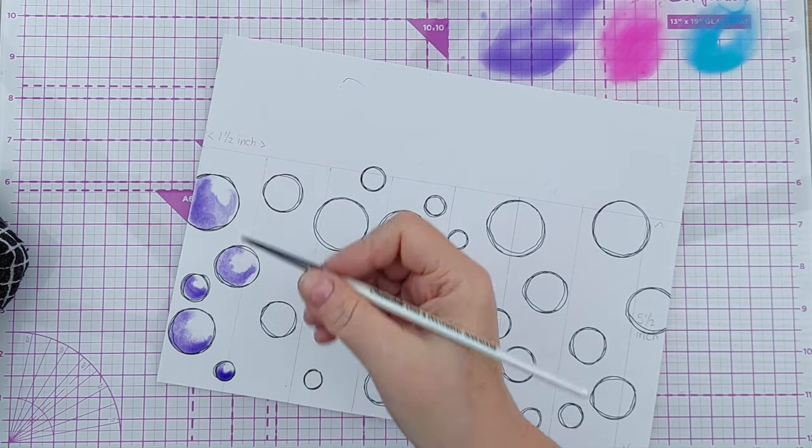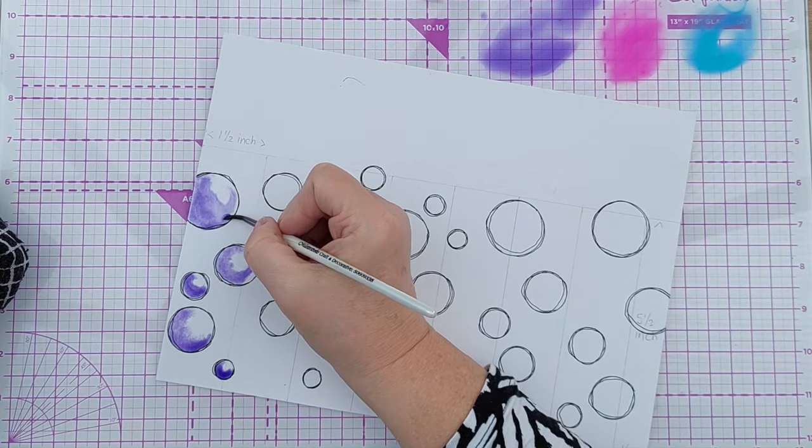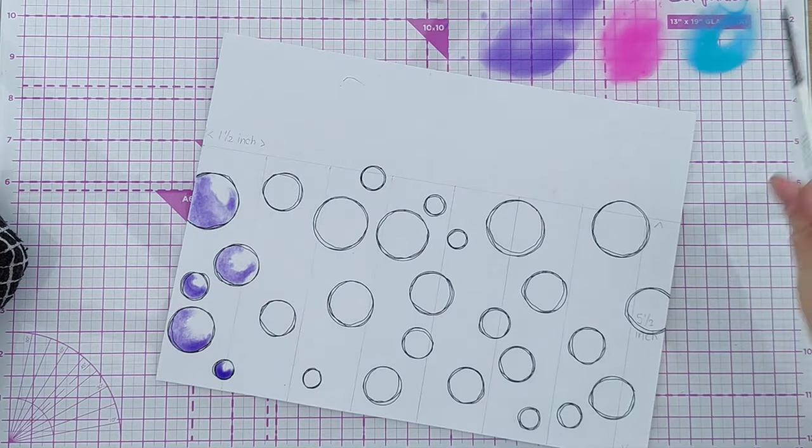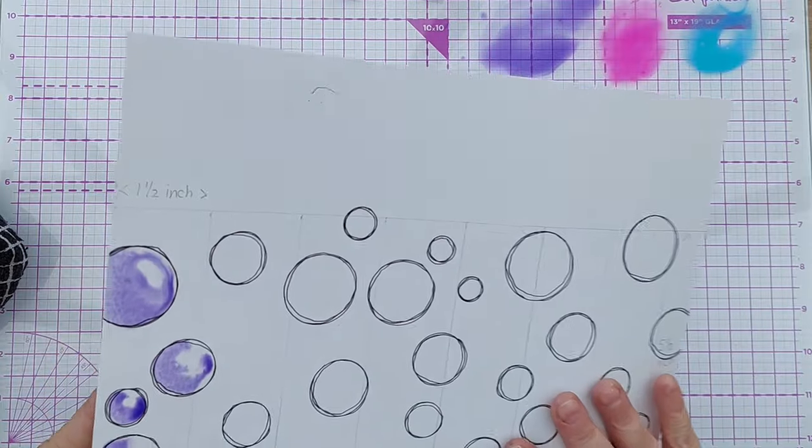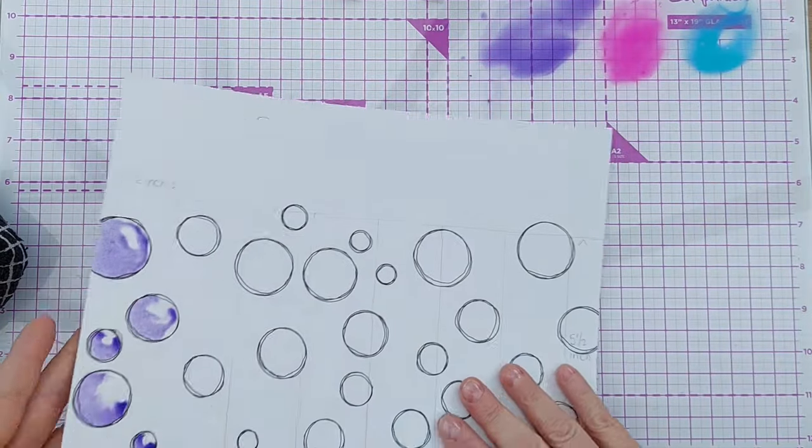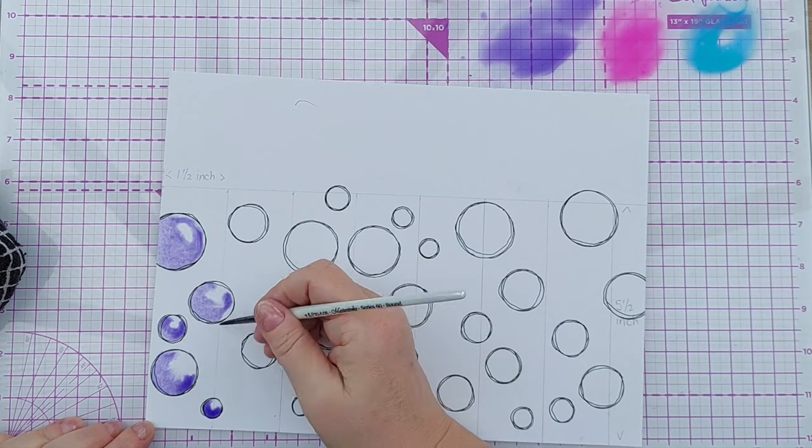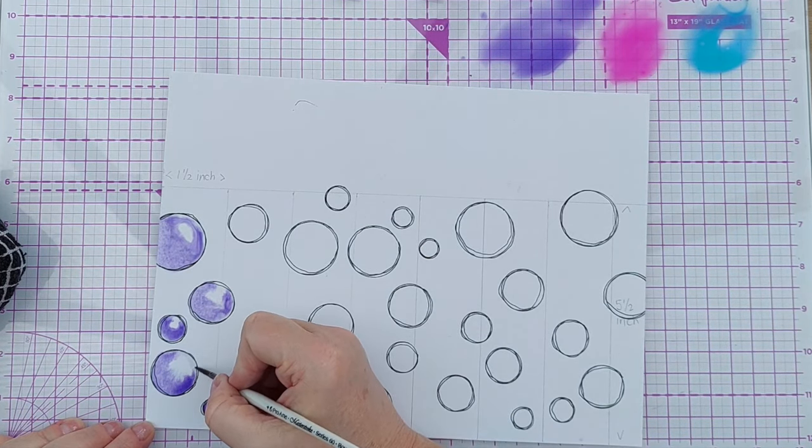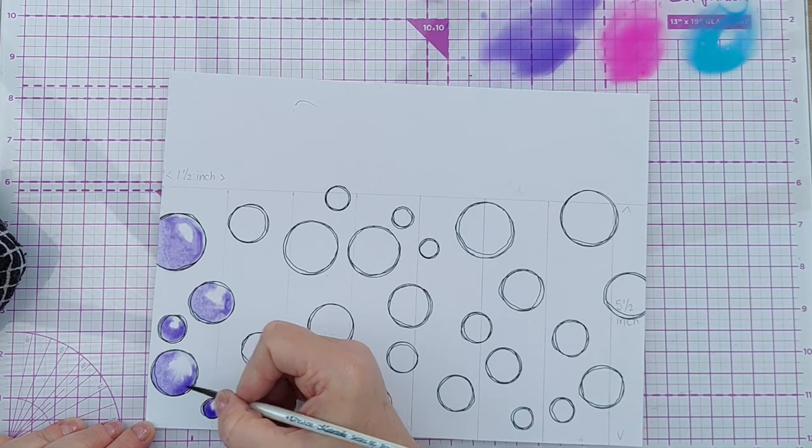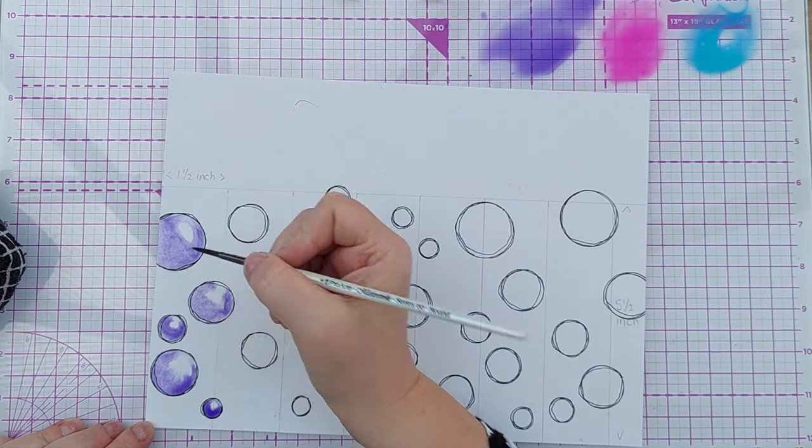So here I'm adding paint to the bottom left of the baubles and I'm letting the paint just do its own thing and move around. And I can go in and poke about a bit to encourage it to move where I want it, to fill up any gaps.